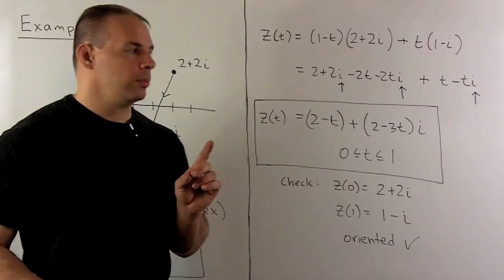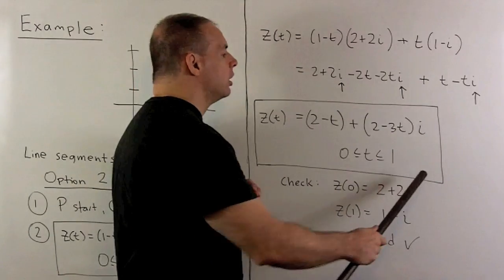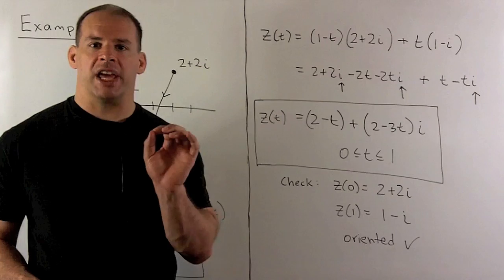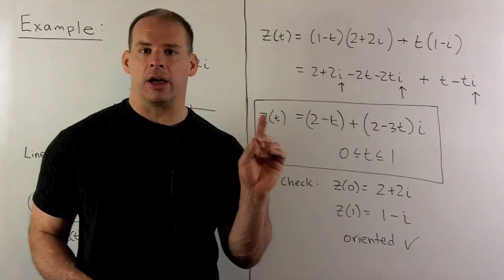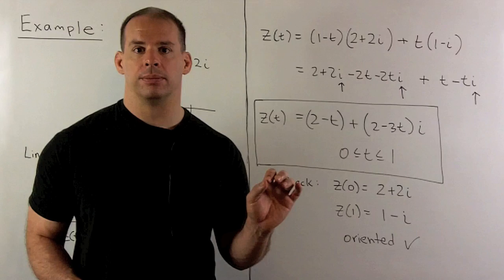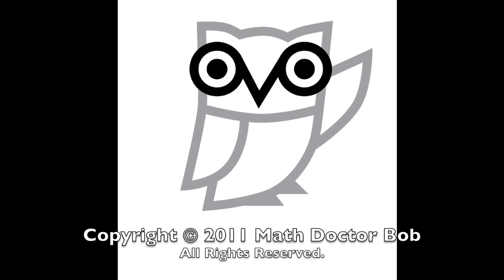One last thing to note. This parametrization here looks nothing like the one I got using the previous method. So, parameterizations for a given line segment are not going to be unique. You can come up with as many as you would like. Thank you.